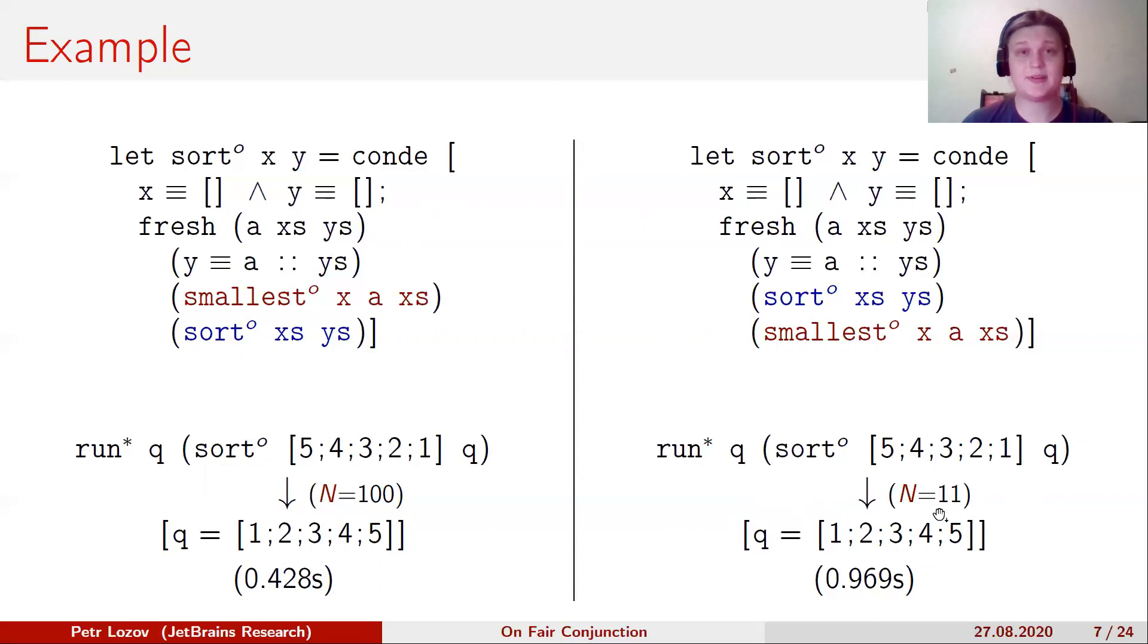As you remember, left-biased conjunction didn't find an answer even in five minutes. But it's still worse than the pessimistic case. Also, if N is not 11, then the performance is much worse.